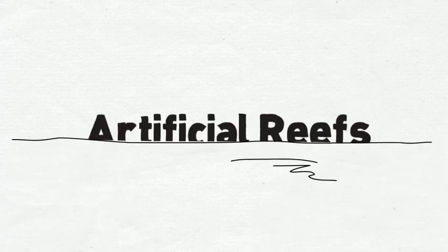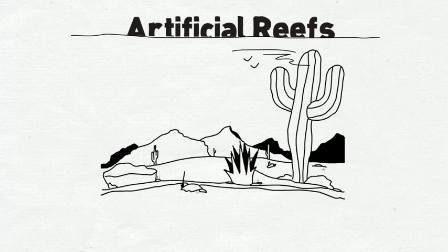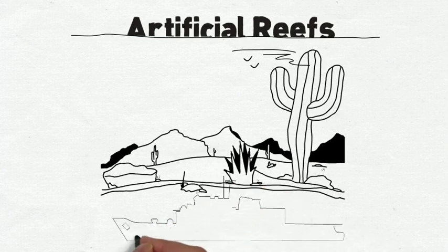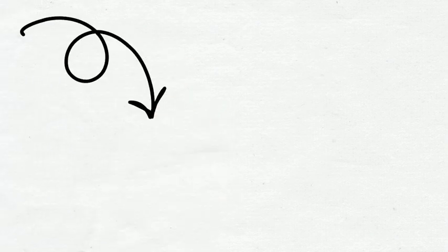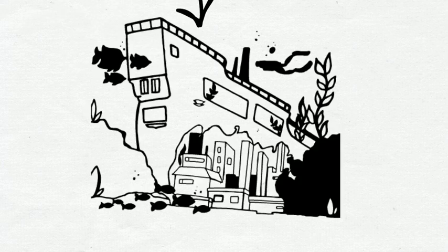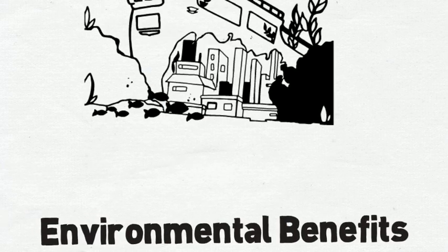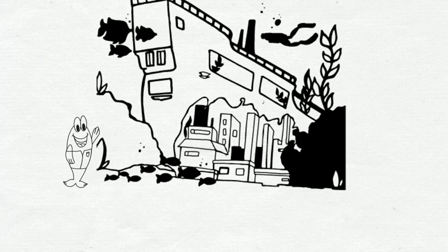Artificial reefs are produced when diverse man-made objects are submerged onto a desolate area of the ocean floor. These artificial reefs provide areas of shelter for new marine life and contribute to the survival of natural reefs by increasing the production of available food for different species.